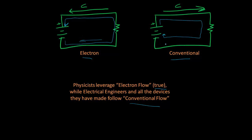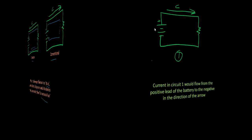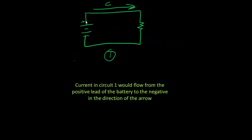That current is what we actually leverage and measure in electronics. Simple concept: this being the positive terminal of the battery and this being the negative, we believe current flows from positive to negative — in this direction — and that's what we've got in circuit one.